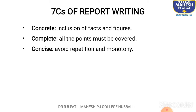The third C is concise. It has to be to the point — you should not be writing excessively or beating about the bush. Your writing should be crisp. Whatever information is mentioned, you have to write that in your report, and there shouldn't be repetition. When I say concise, you have to avoid repetition and monotony. Monotony creates a tiresome environment, and you avoid it by avoiding repetition.